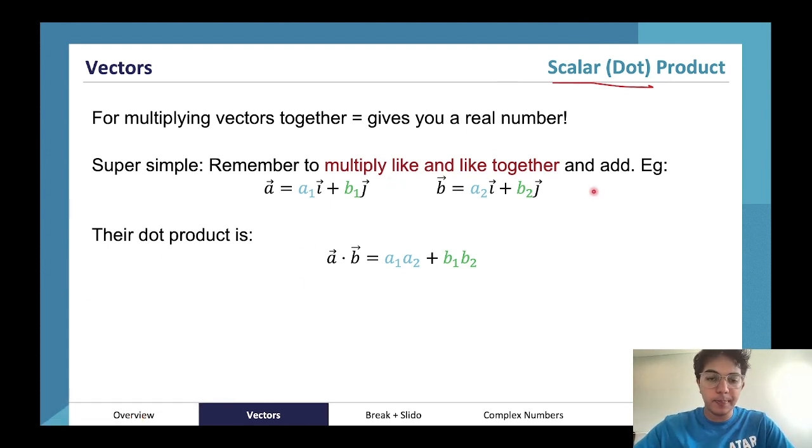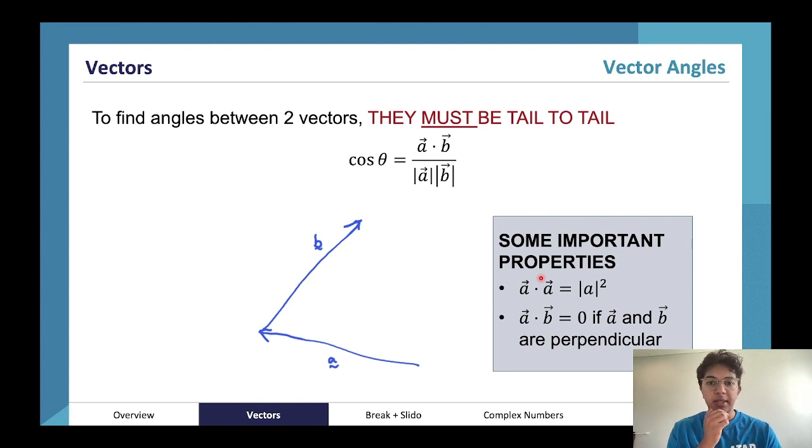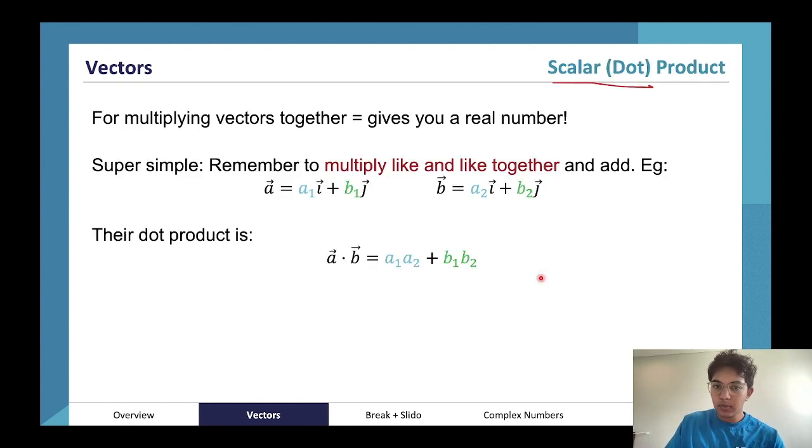So dot product or scalar product, it's sort of like multiplying vectors together but not really. What we do here is we multiply the like terms when we do a dot product. So everything in front of i is multiplied with everything in front of i, and everything in front of j and k, and so on. So here we're gonna multiply the a's so we get a1 a2, and then we're gonna multiply the two b's so b1 b2, and then we're gonna sum them together. Pretty straightforward, pretty cool stuff but it's pretty important.